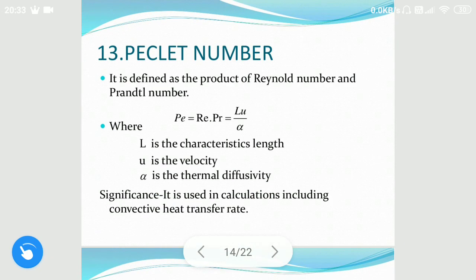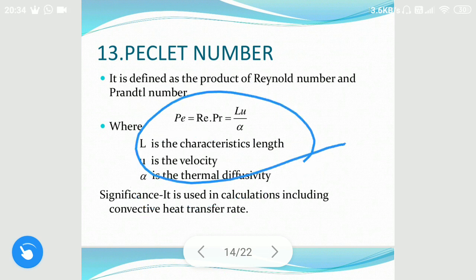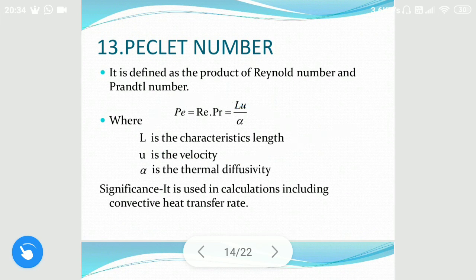Peclet number is a product of Reynolds and Prandtl number. It is given by L·u divided by alpha, where alpha is the thermal diffusivity, u is the velocity of the fluid, and L is the characteristic length. Peclet number is used in the calculation of convective heat transfer rate.